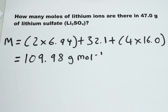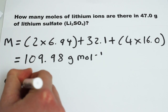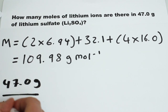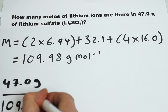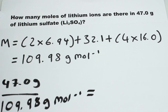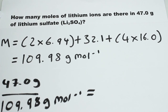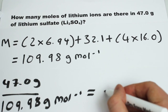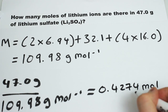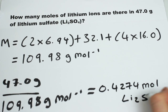So now we know the molar mass of lithium sulphate, we can work out the number of moles of lithium sulphate in this sample. As we saw in our formula, to work out the number of moles we need to know the mass, which is 47.0 grams, and we divide that by the molar mass, which is 109.98 grams per mole. We give our answer to four significant figures to avoid inaccuracies later on, which is 0.4274 moles of Li₂SO₄.